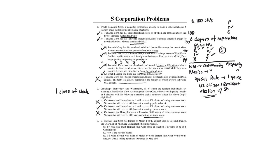Problem 3A: Tropical Fruit Corp was formed on March 1st of the current year by Coconut, Mango, and Guava — all U.S. resident citizen individuals. By what date must Tropical Fruit Corp make an election to be an S-corporation? If you want S-corporation status in the first year, you must elect within two and a half months after the starting point. Counting from March 1st: full month of March is one, April is two, halfway through May — so the election must be made by May 15th.